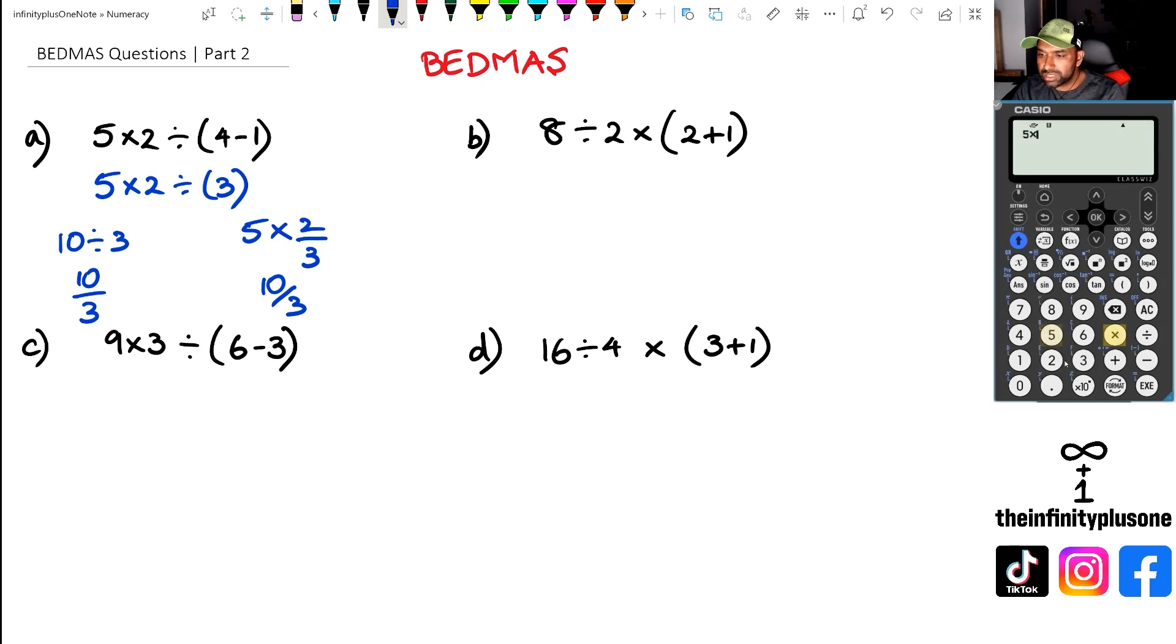Now if I was to do this in the calculator, I've got 5 times 2 divided by 4 minus 1, and as you can see, I'm getting 10 over 3 there.